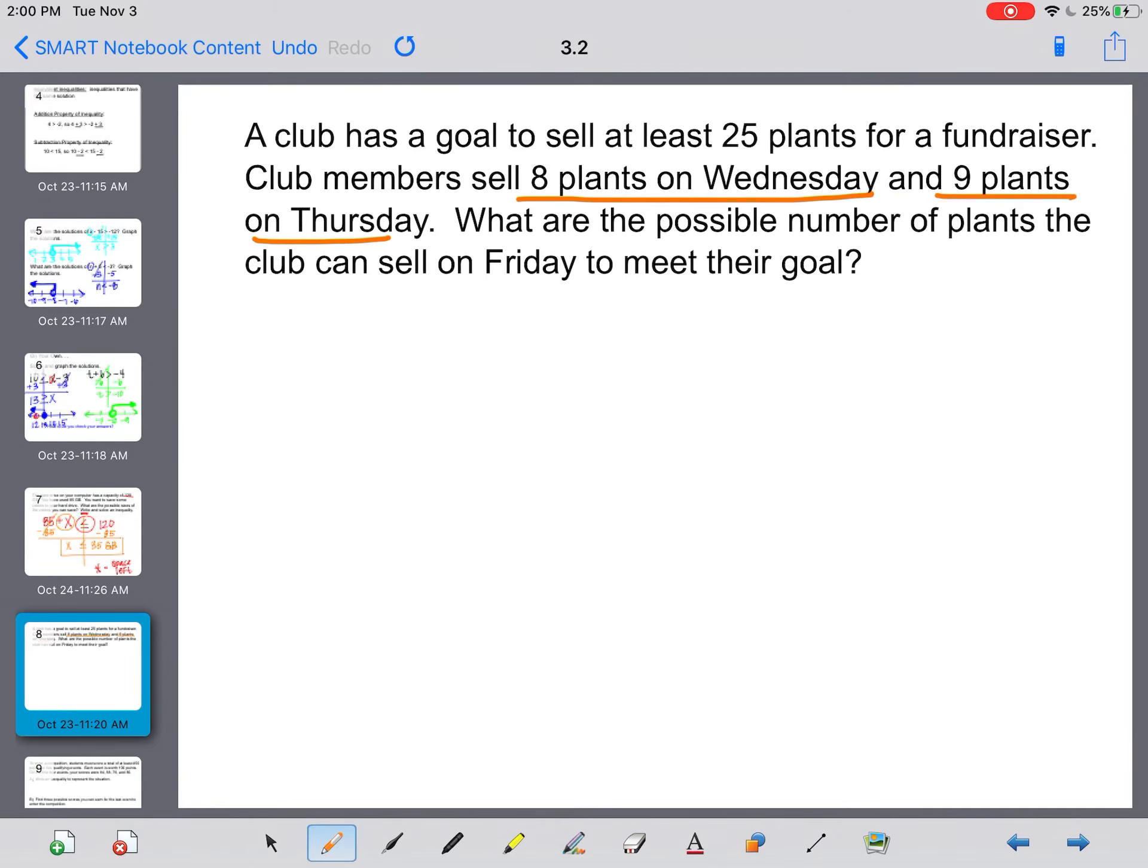Okay, a club has a goal to sell at least 25 plants for a fundraiser. Club members sell 8 plants on Wednesday, 9 plants on Thursday. What are the possible number of plants the club can sell on Friday to meet their goal? Alright, so 25 is their goal. That means our total needs to be 25. If they're trying to get to 25, that would be their goal. That means it could be equal. Do they want anything less? No. Would they be okay with more? Yes.